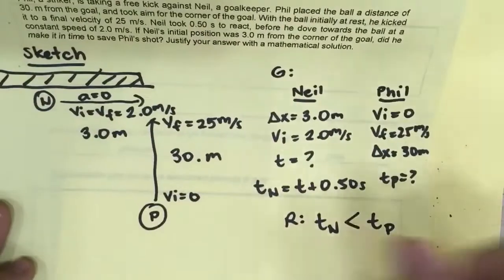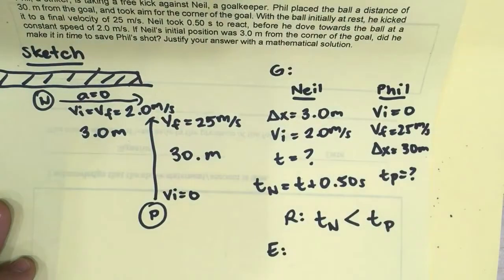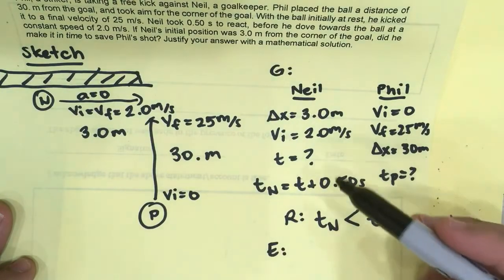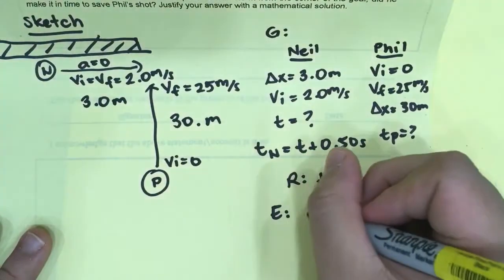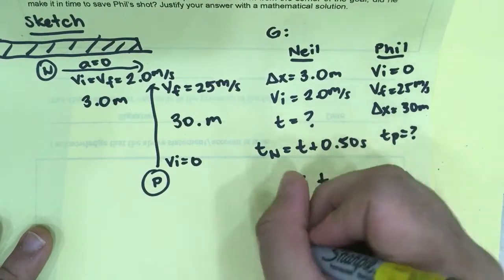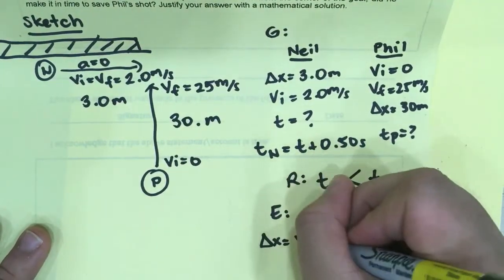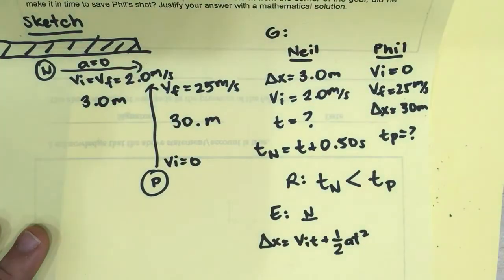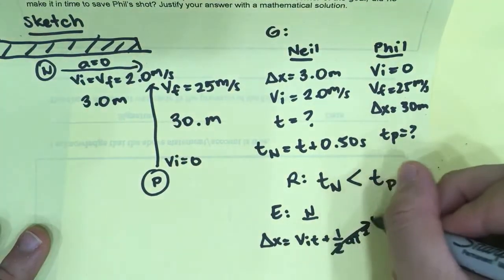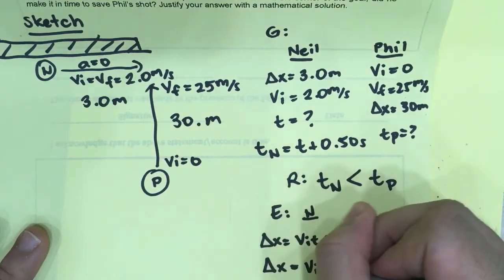So now let's check. What equation can we use for this case? Well, in this equation, delta X, VI, and T, and we also know that acceleration is 0. For Neil, we can use the equation delta X is equal to VIT plus 1 half AT squared. But with the knowledge that acceleration is 0, therefore, it's simply VIT.